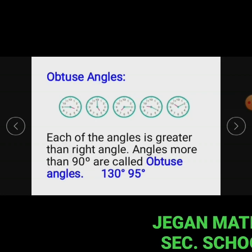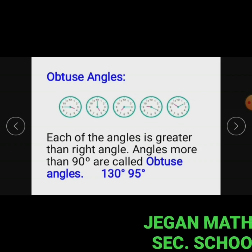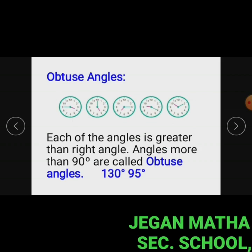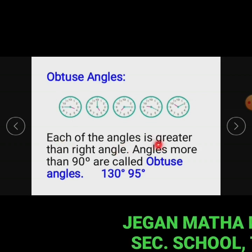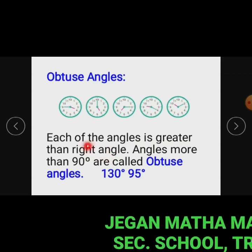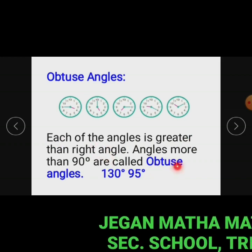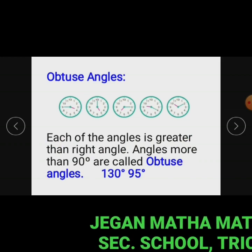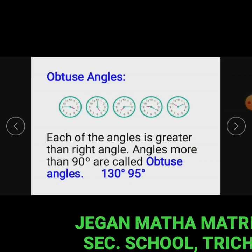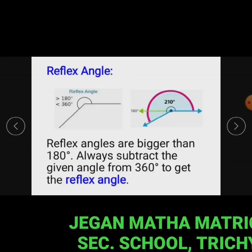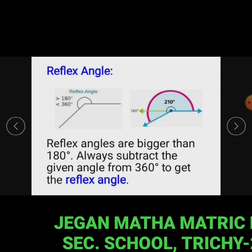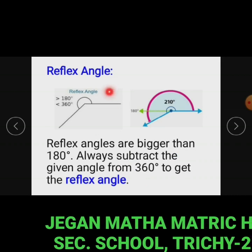In this figure, the clocks show each of the angles is greater than a right angle. Angles more than 90 degrees are called obtuse angles. For example, 130 degrees and 195 degrees are obtuse angles.